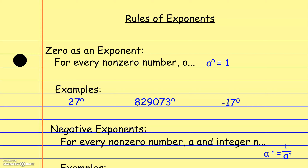Looking at these examples: 27 to the 0th power is just 1. And 829,073 to the 0 power also equals 1. This next one is a little tricky — it's negative 17 to the 0 power, which is actually negative 1. It would only be positive 1 if we had negative 17 in parentheses to the 0 power. So we have to watch out for that.